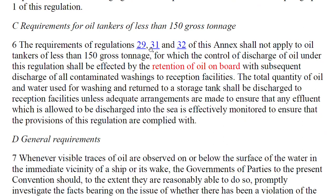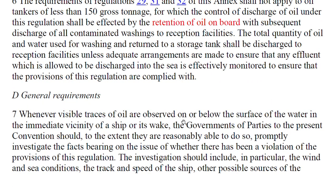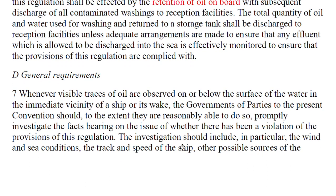For oil tankers of less than 150 gross tonnage, the control of discharge of oil shall be effected by the retention of oil on board. The oil is retained and delivered to reception facilities. It is stored in a storage tank and shall be discharged to a reception facility, unless adequate arrangements are made to ensure that any effluent allowed to be discharged to sea is effectively monitored. There are also general provisions that if there are visible traces of oil, the government and port authority will inspect the vessel.